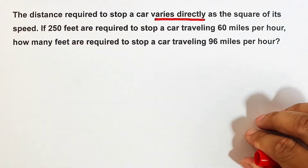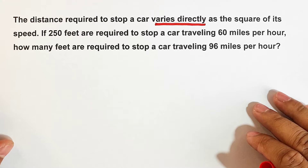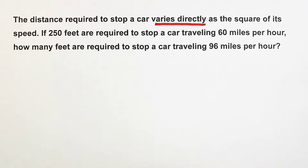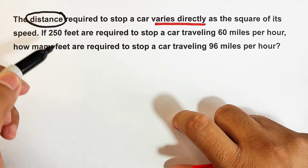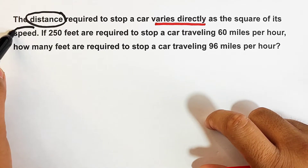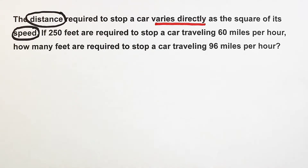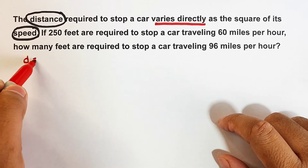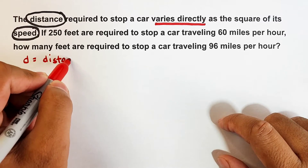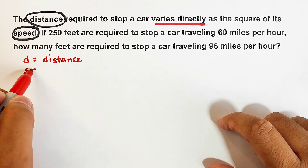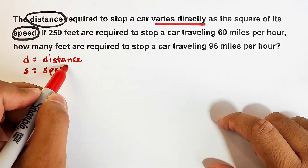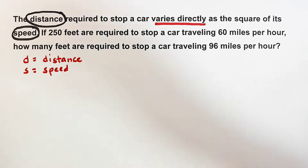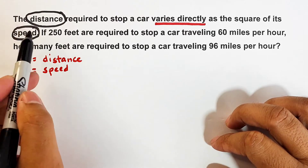What we need to do is identify the different variables in this problem. First, we have the distance; second, we have the speed. The distance varies directly as the square of its speed. We will use 'd' to represent the distance and 's' for the speed, then create an equation.